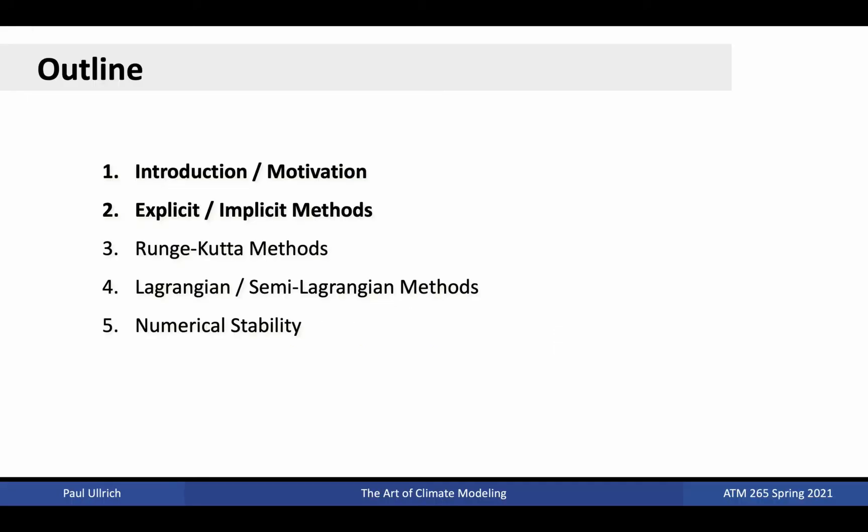This topic is broken up into five subtopics, including motivation, an overview of simple explicit and implicit methods, an overview of Runge-Kutta methods, a discussion of Lagrangian and semi-Lagrangian methods, and a brief explanation of numerical stability and how to assess model stability. Today's lecture covers the first two of these topics.